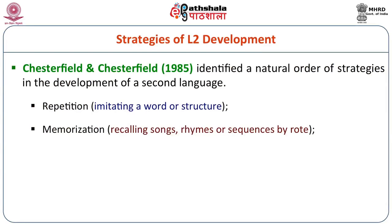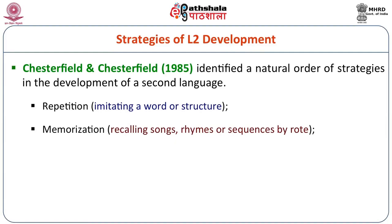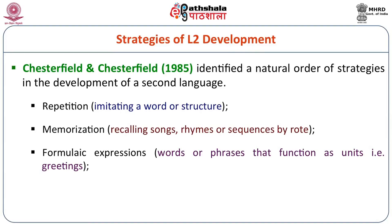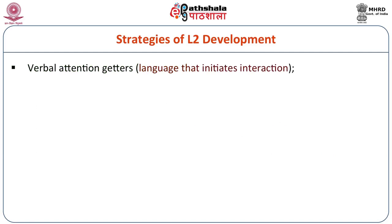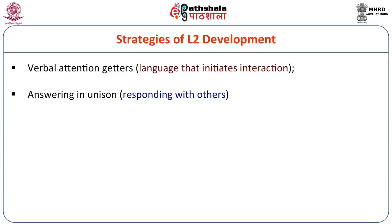Second is memorization. When the child gains some age and goes to school, he is told some lyrics and supposed to memorize them — recalling songs, rhymes, or sequences by rote. Third is the formulaic expression: words or phrases that function as units, like greetings — 'How are you?', 'I am fine', 'Good morning', 'Good evening'. Stage four is verbal attention getters — language that initiates interactions, situation-based, where the child is comfortable and starts speaking. Finally, answering in unison — responding with others without any preparation.